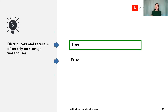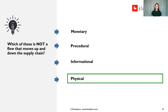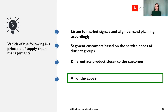True or false: distributors and retailers often rely on storage warehouses. This is true. Which of the following is not a flow that moves up and down the supply chain? Monetary, procedural, informational, or physical? Physical is not a flow that moves up and down the supply chain. Which of the following is a principle of supply chain management? A, listen to market signals and align demand planning accordingly; B, segment customers based on the service needs of distinct groups; C, differentiate product closer to the customer; or D, all of the above. The answer is D, all of the above.